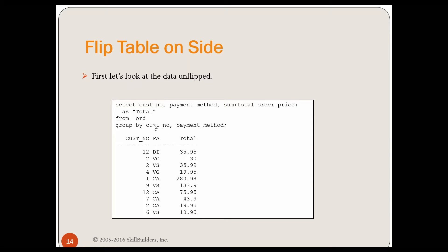We're going to use the following data. We have a table called our ORD table for orders, which has a customer number, a payment method, and a total order price. We're going to sum up the total order price and group by customer number and payment method. Fairly standard group by clause — all the columns without an aggregate have to be in the group by.